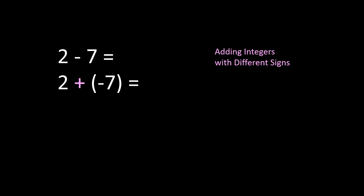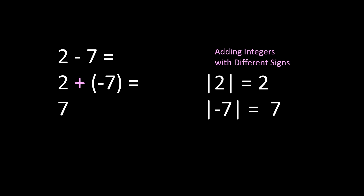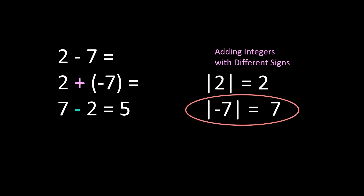The rules for adding integers with different signs say to look at the absolute values. The absolute value of 2 is 2, and the absolute value of negative 7 is 7. We subtract the smaller from the larger: 7 minus 2 is 5. Then we determine the sign — the number with the larger absolute value was negative 7, so our answer is negative. So 2 minus 7 is negative 5.